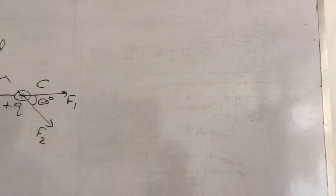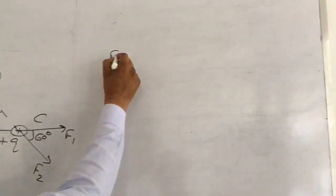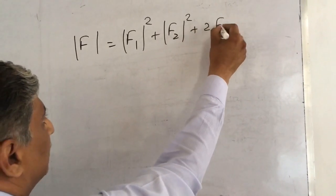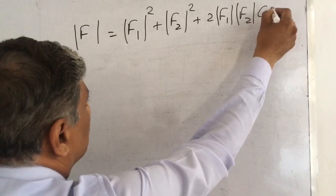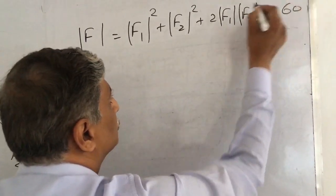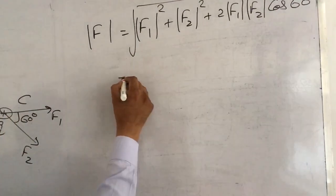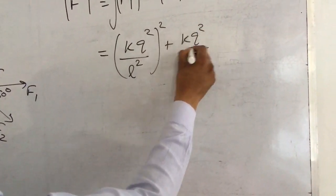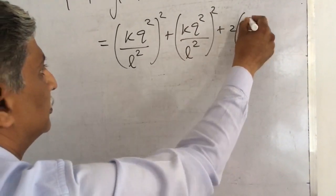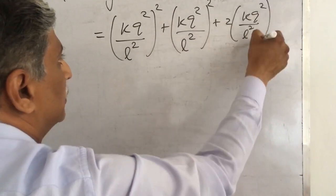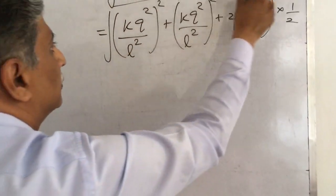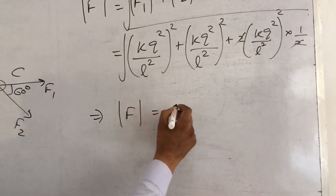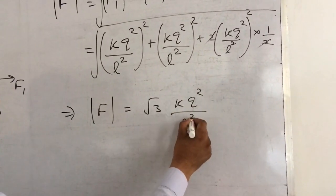The total force on charge at C is the vector sum of F1 and F2. Using the parallelogram law, the magnitude is the square root of F1 squared plus F2 squared plus 2·F1·F2·cos(60°). Substituting F1 = F2 = KQ squared upon L squared and cos 60° = 1/2, the resultant force on charge at C is root 3 times KQ squared upon L squared.